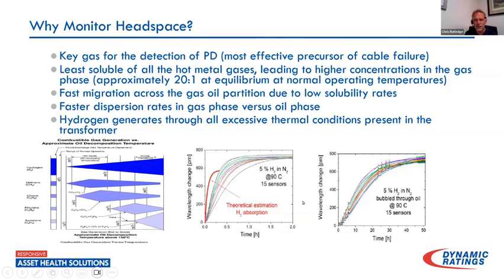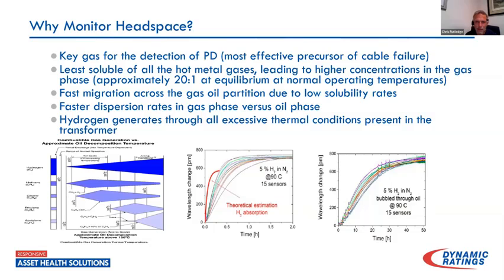This actually came from another company but I like to include it because it verified what I had seen in my own testing. Looking at the chart in the middle — 15 hydrogen sensors installed in the gas phase, 5% hydrogen and nitrogen base at 90 degrees C, pretty high solubility for hydrogen at that temperature — they reached max absorption about one hour's time, about what I was seeing. Then they also did sensors in oil for comparison and in the same experiment you can see it's over 50 hours before really reaching equilibrium, with a wider, less consistent dispersion of the gas.